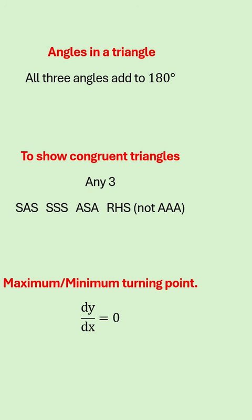In any triangle all angles add up to 180 degrees. To show if triangles are congruent you need to show three things. Do not use AAA, angle angle angle, as this will only show similar triangles.